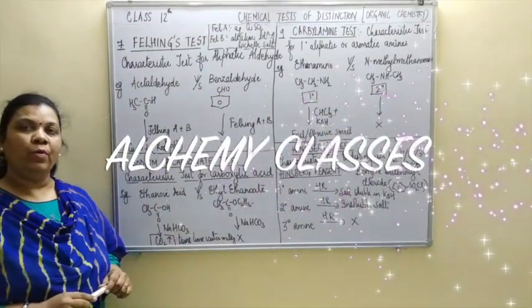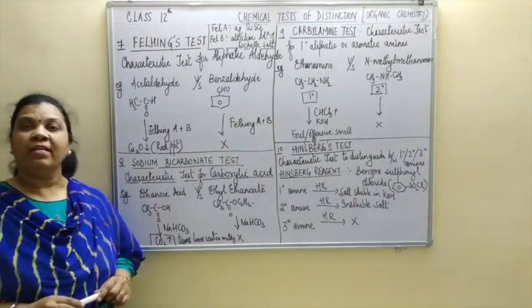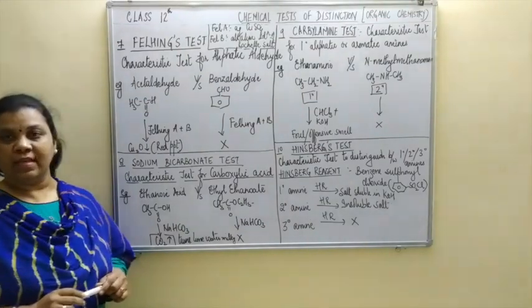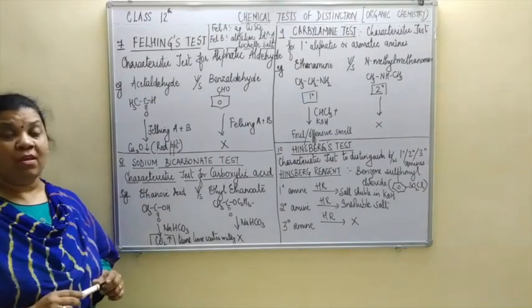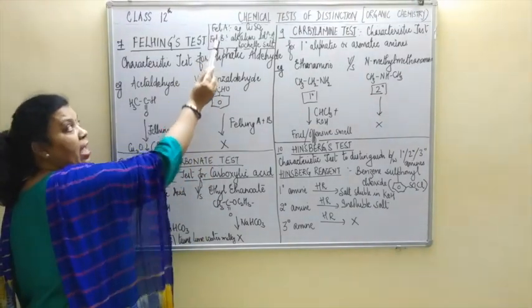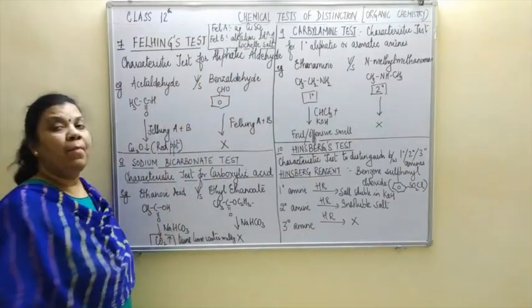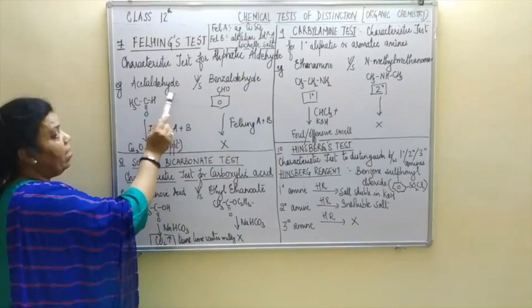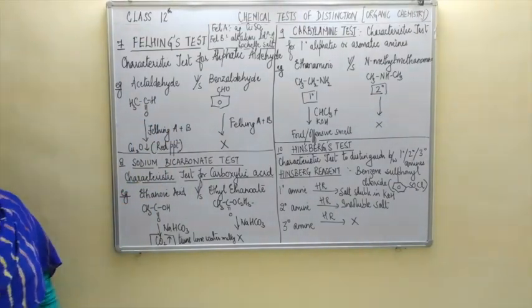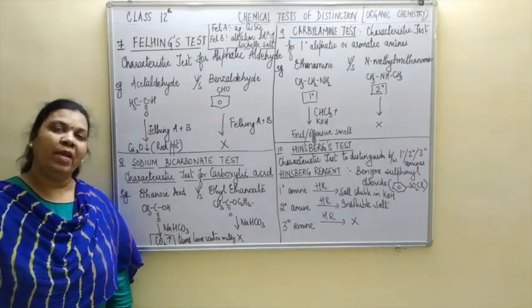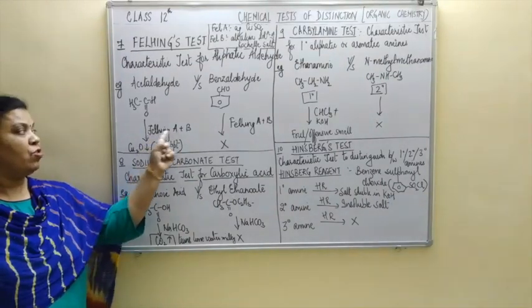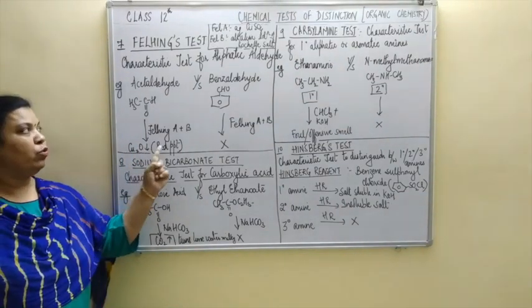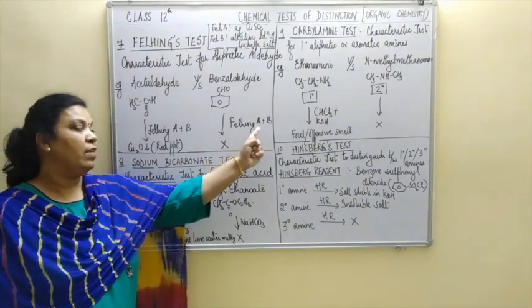Let us move on to the Fehling's test. It is the characteristic test exclusively for aliphatic aldehydes — aromatic aldehydes will not give this test. In Fehling's test we use Fehling's solution, which is a combination of two solutions: Fehling A, comprising aqueous copper sulfate, and Fehling B, comprising alkaline solution of Rochelle's salt. For example, to distinguish between acetaldehyde versus benzaldehyde: acetaldehyde is an aliphatic aldehyde, benzaldehyde is an aromatic aldehyde. When you add Fehling A and B mixture to acetaldehyde, you will get a red precipitate of cuprous oxide (Cu2O). No such observation will appear on addition of Fehling's solution to benzaldehyde.